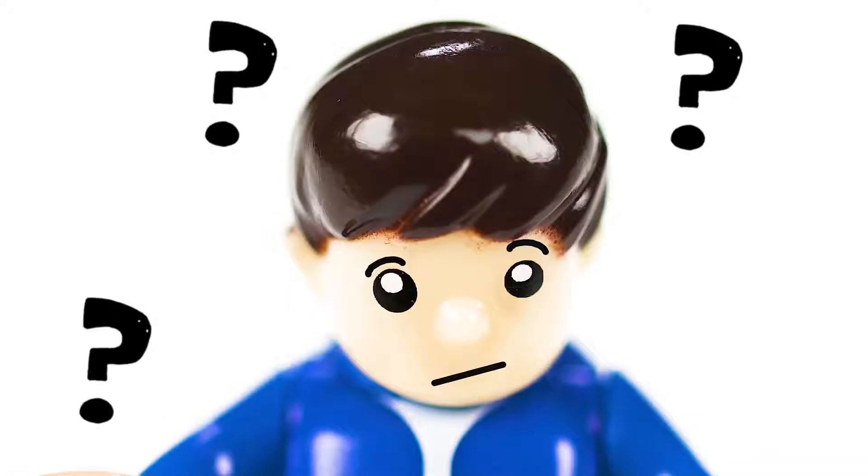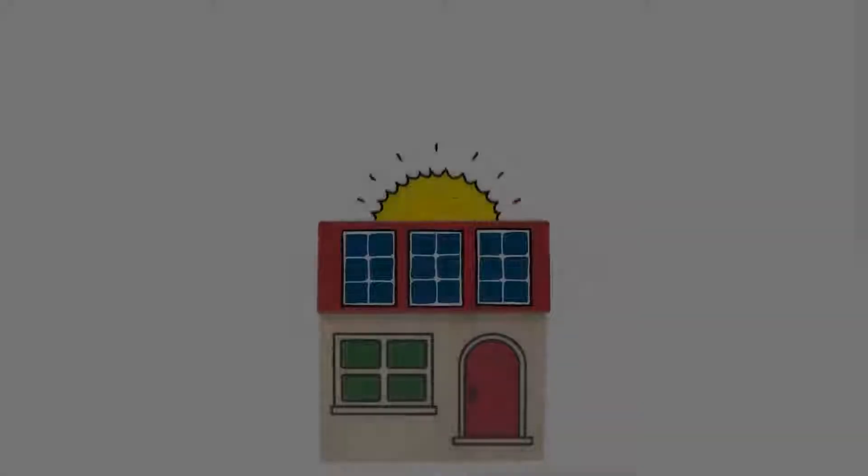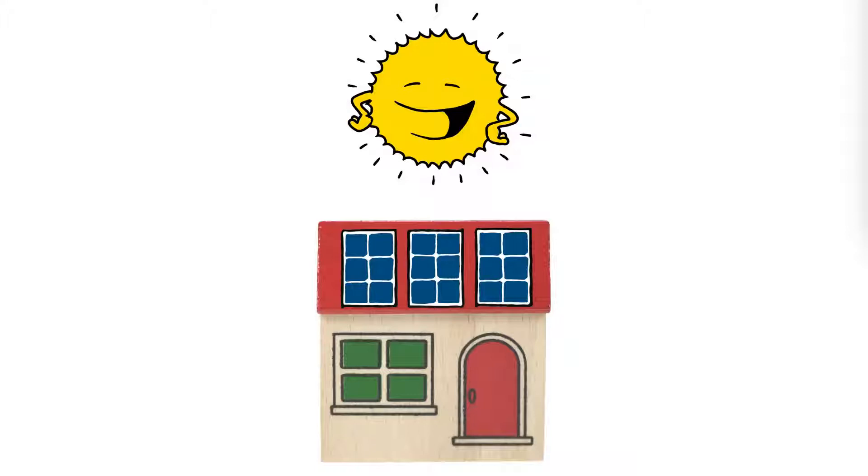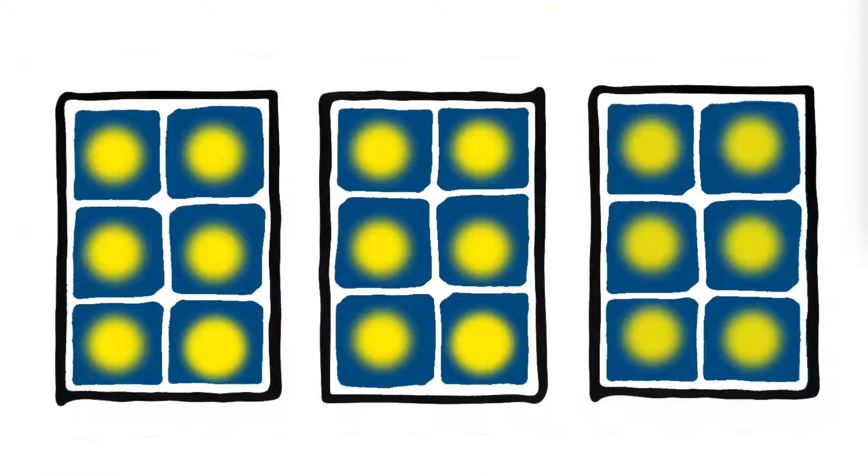But how does it work? The electrical current through the solar modules depends on the sunlight. Without shade, the current is high. In the shade, it is much lower.